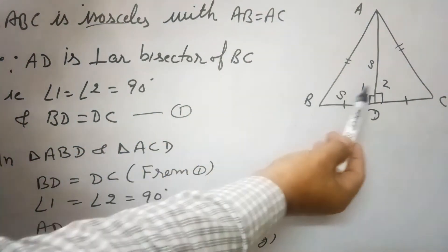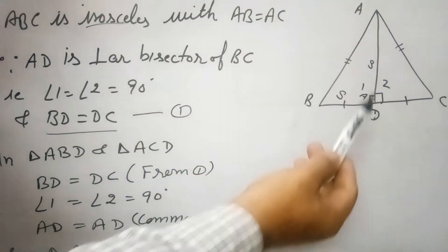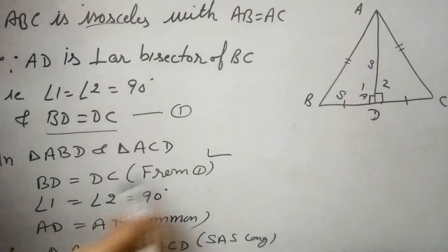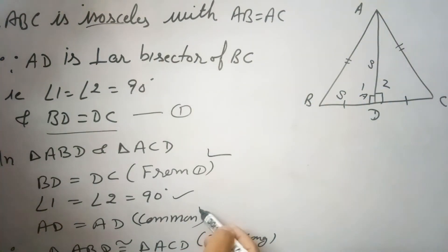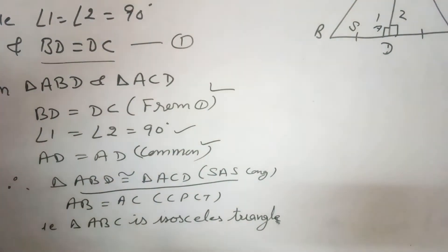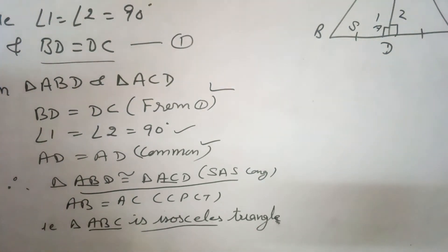Angle 1 equals angle 2 and BD equals DC. Now in triangle ABD and ACD, BD equals DC because this is the bisector. Angle 1 equals angle 2, these are 90 degrees, and AD is common. So both triangles are congruent by side-angle-side congruency criteria. From here, AB equals AC. AB and AC are two sides of triangle, so triangle ABC is isosceles triangle.